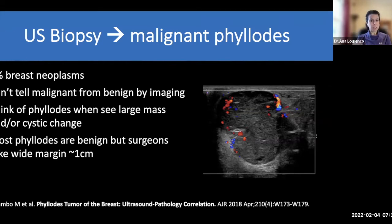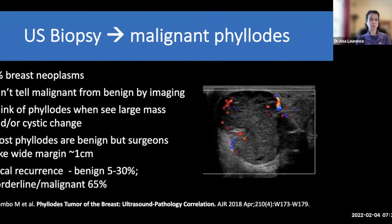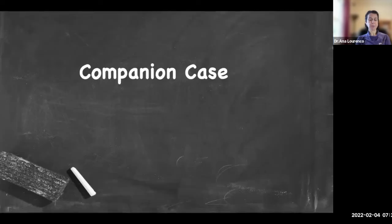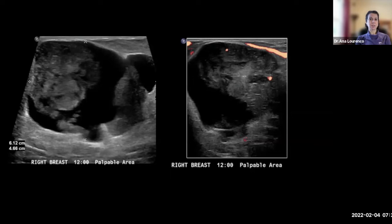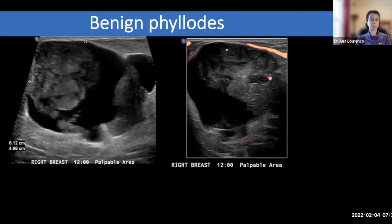The vast majority of phyllodes tumors are benign, but surgeons will take a wider margin — about one centimeter — because even when benign, they can locally recur. The recurrence rate is 5–30% for benign phyllodes, and as high as 65% for borderline or malignant. Here's a companion case — even bigger at six centimeters, definitely with cystic change and solid components with internal vascularity — this one was benign phyllodes at biopsy. We really can't predict with imaging which is malignant; that's for pathology to diagnose.